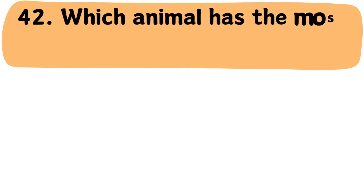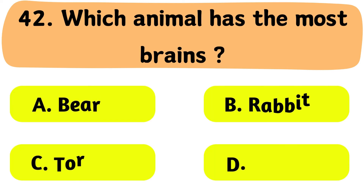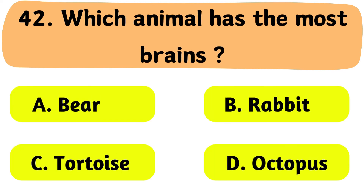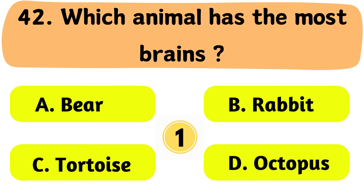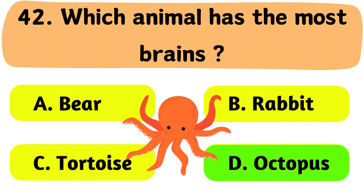Question No. 42: Which animal has the most brains? A. Bear. B. Rabbit. C. Tortoise. D. Octopus. The correct answer is Option D: Octopus.